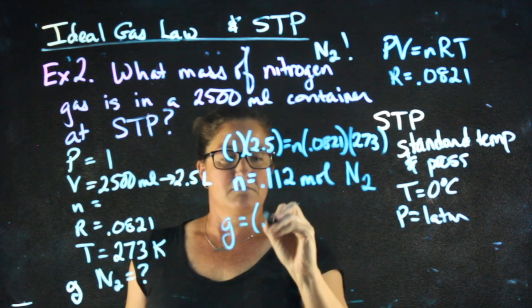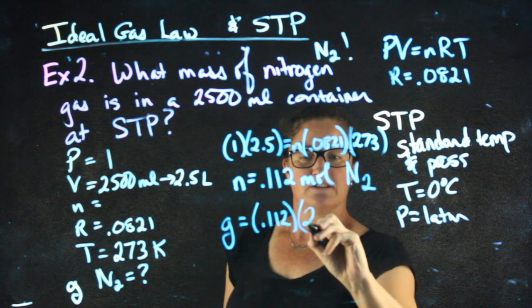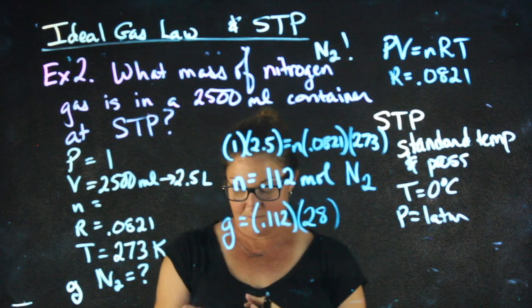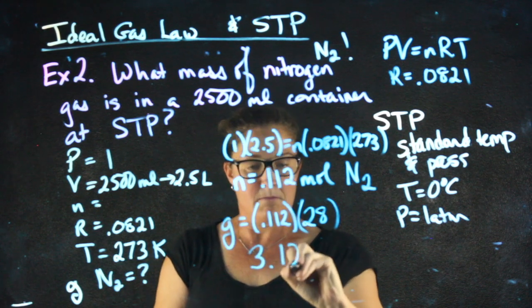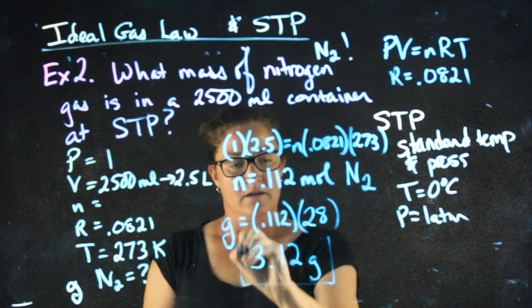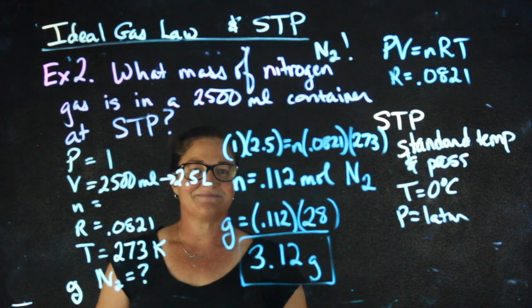So grams equals moles times the molecular weight of nitrogen, which is 14 times 2. Gives me 3.12 grams.